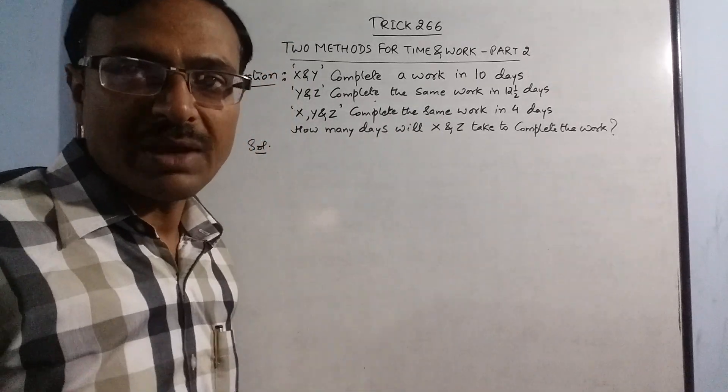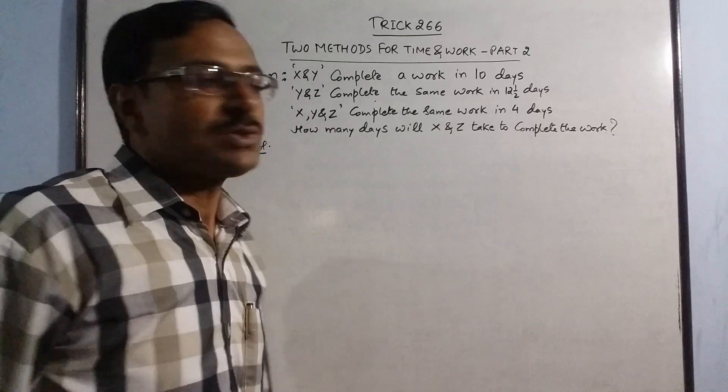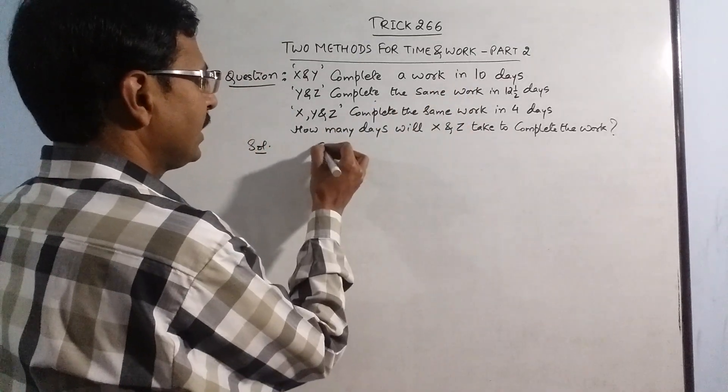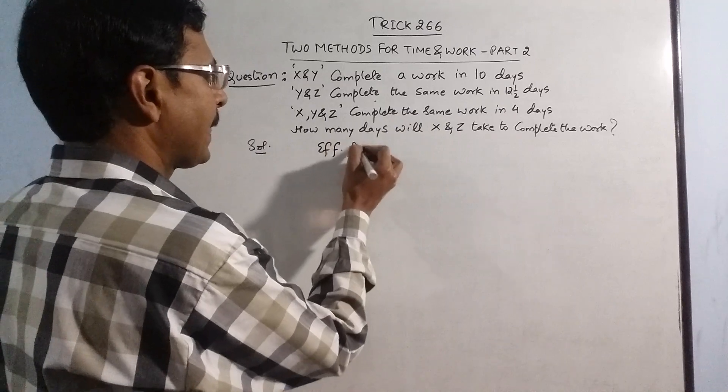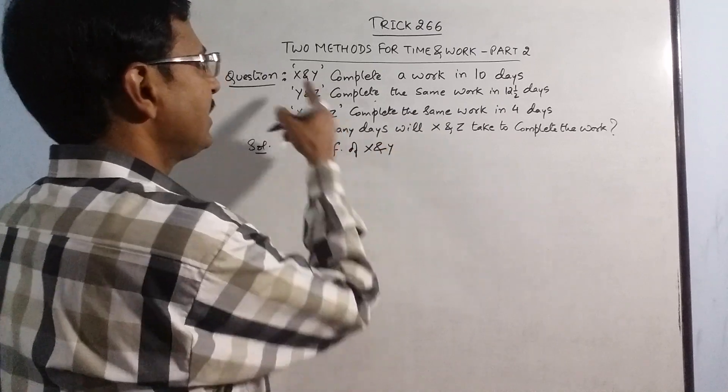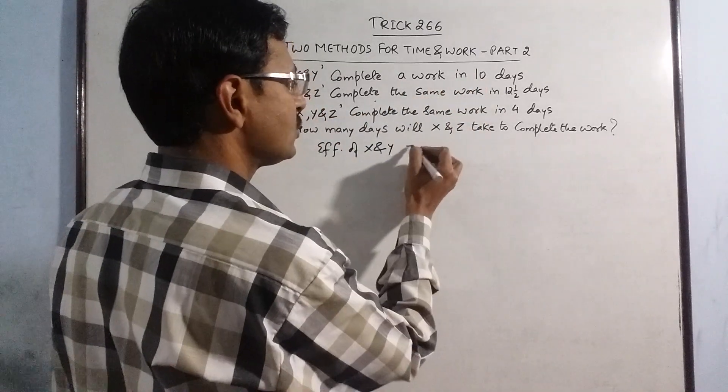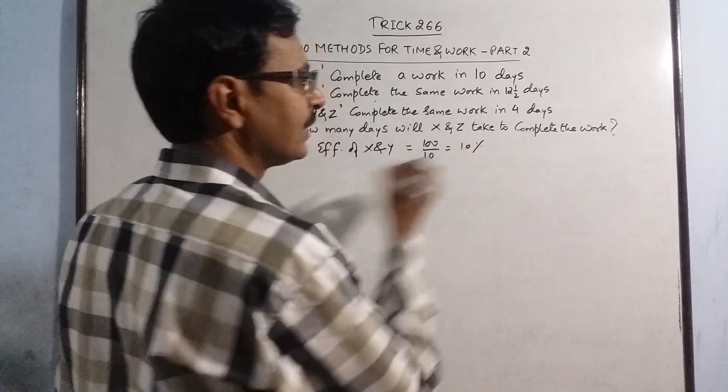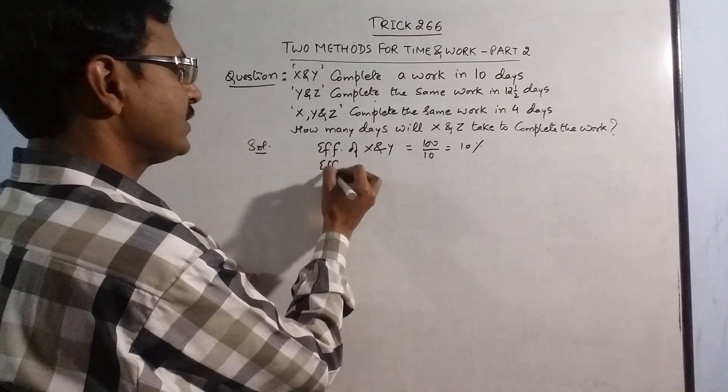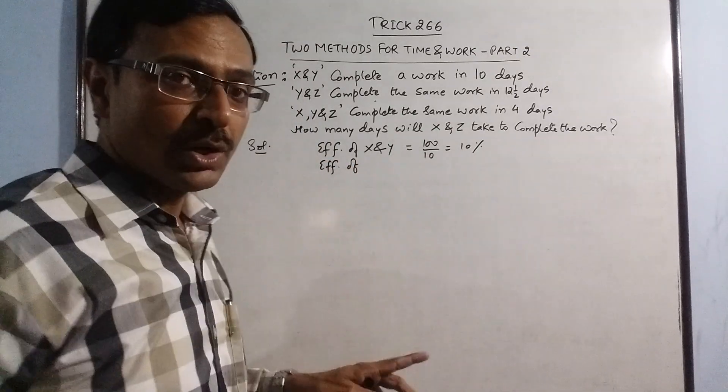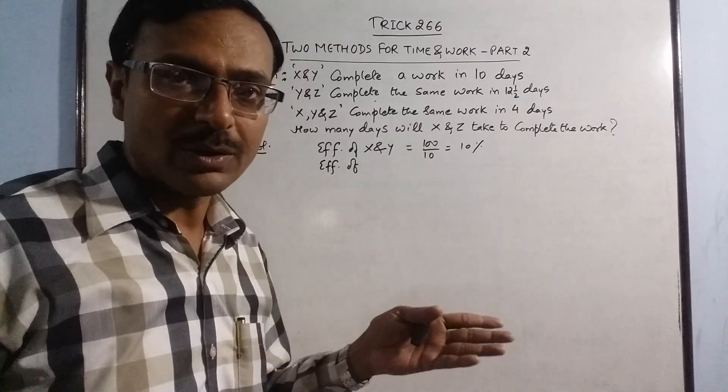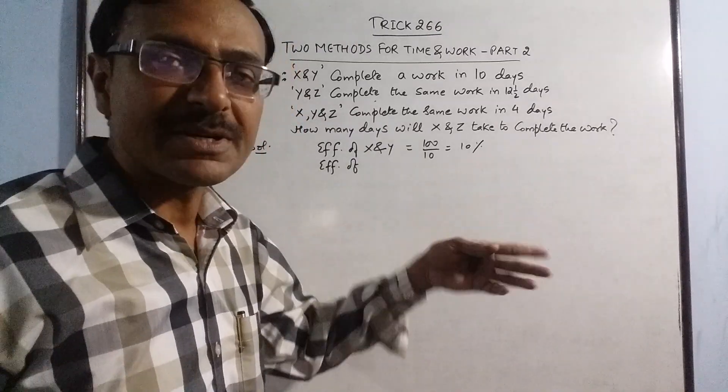Now I am telling you the solution through the efficiency method. So see here we are given that x and y, 10 days, so efficiency will be 100 upon 10 that is 10 percent. Similarly efficiency of, see I am writing all the steps just to tell you the procedure but when you solve this in competitive exams you don't need all these steps, you just need the percentages.